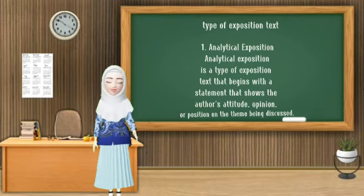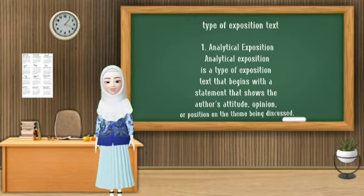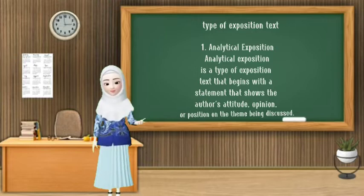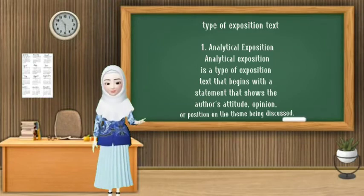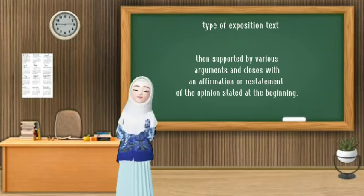For the next topic: types of exposition text. For the first type is analytical exposition. An analytical exposition is a type of exposition text that begins with a statement showing the author's attitude, opinion, or position, underpinned by supporting evidence. Then, supported by various arguments, and closes with an affirmation or restatement of the opinion stated at the beginning.